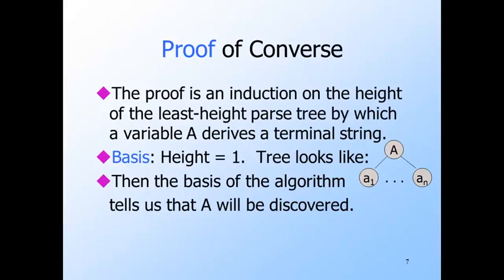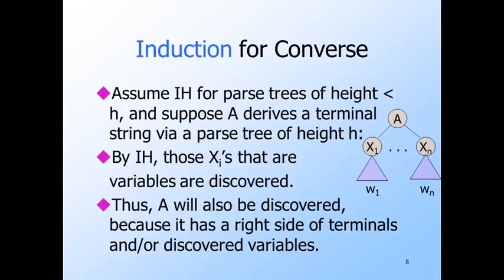The proof is an induction on the minimum height of a parse tree with root A and a yield of terminals. The basis is a tree of height one, which consists of root A and one or more leaves labeled by terminals, or perhaps epsilon. Then the basis step of the algorithm discovers A. For the induction, assume the statement is true for height up to h minus one — that is, all variables that are the roots of parse trees with height up to h minus one and the yield of terminals are discovered by the algorithm. The parse tree for A of height h, which must be at least two, has children of the root labeled X1 through Xn. Any one of these Xi's that is a variable is the root of a subtree of height at most h minus one, and therefore it is discovered.